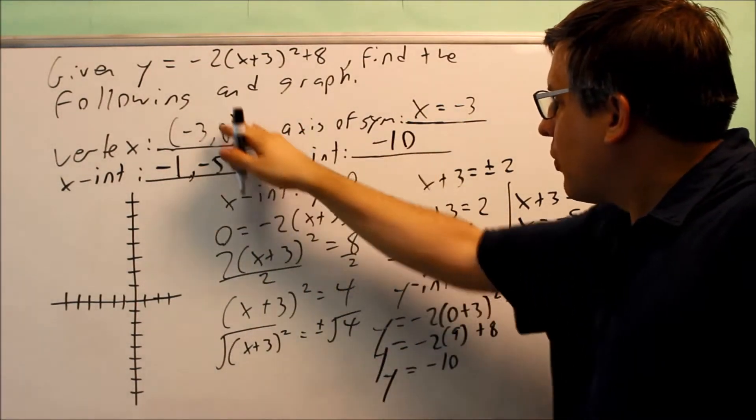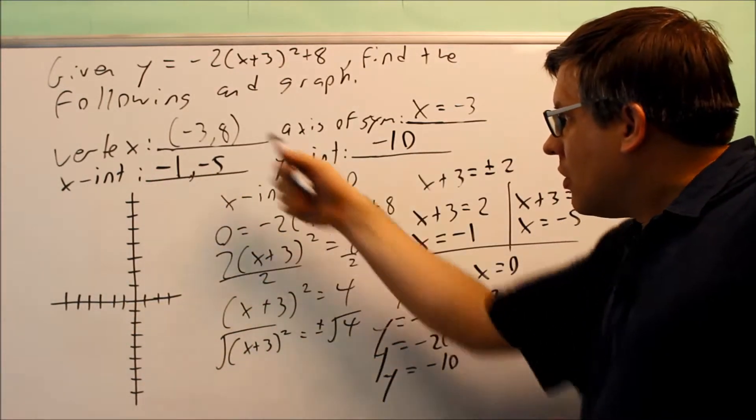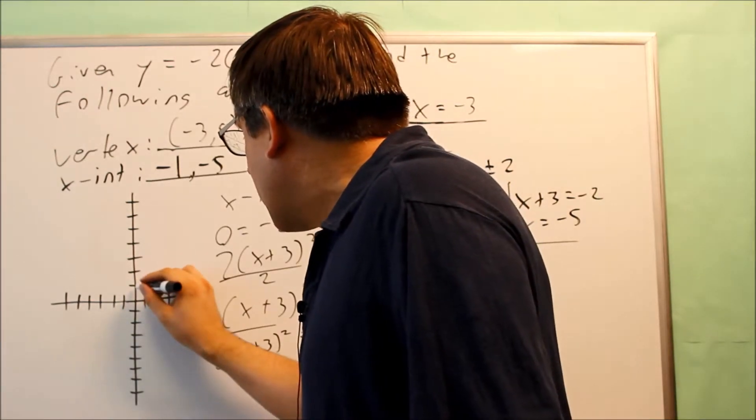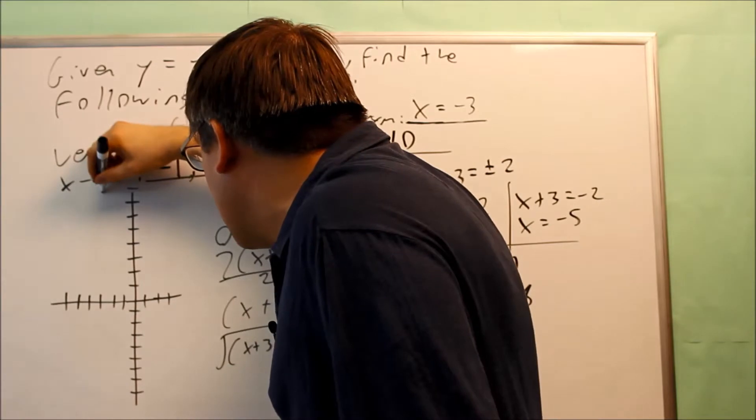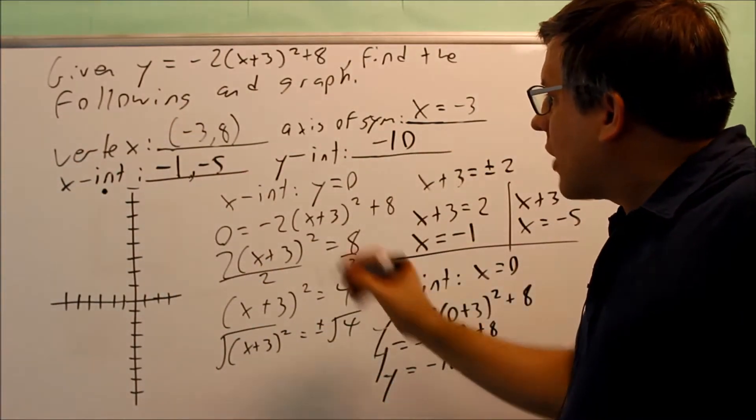So now that I have these points, I can plot all of them, and that's going to give us our graph. Okay, so I have negative 3 and 8. I start with first. So I have one more here. Negative 3 and 8 would be up here. So that would be, that's your vertex.